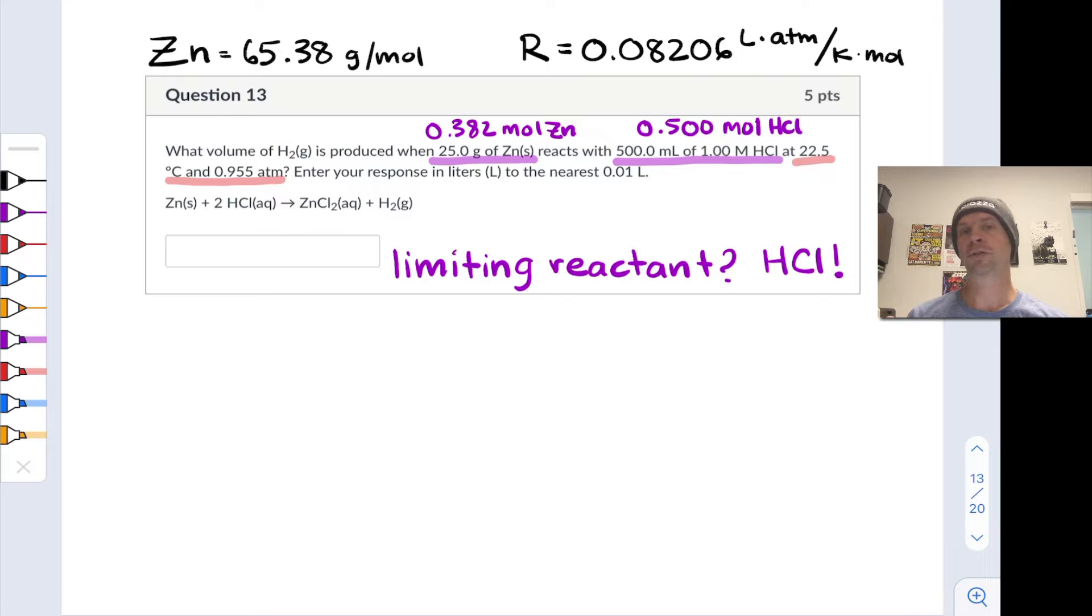The limiting reactant here is hydrochloric acid. And if need be, pause the video now and verify that for yourself using molar ratios and figuring out how much H2 we can make from these given quantities of zinc and hydrochloric acid, HCl. All right. We've got HCl as our limiting reactant. That means we're going to proceed with this number of moles of HCl to figure out the moles of H2 that will be formed in this reaction.